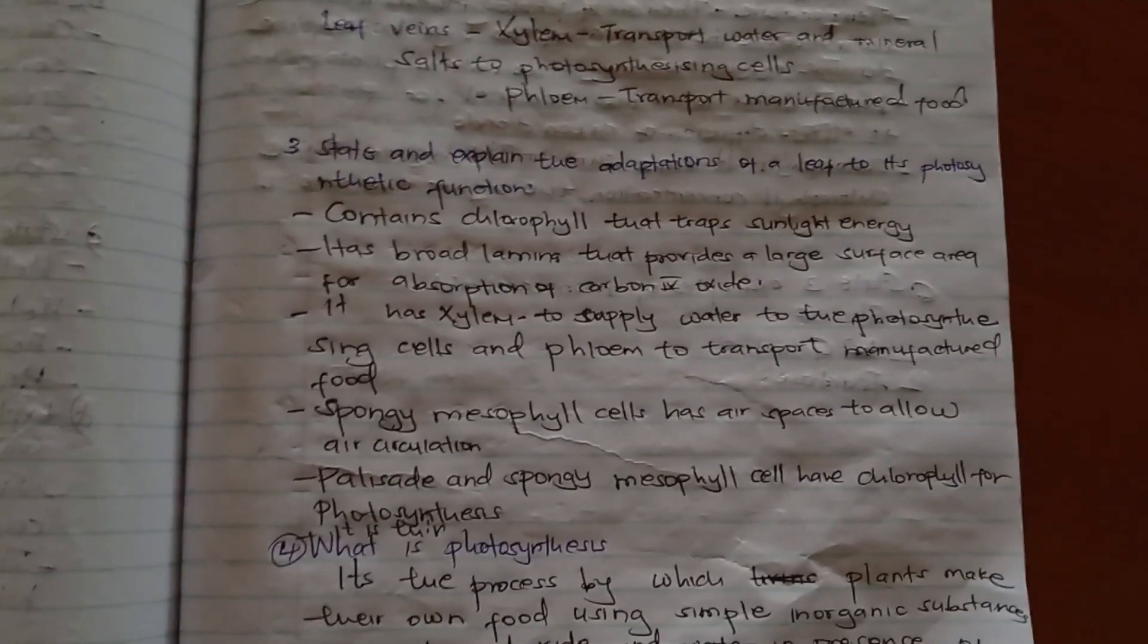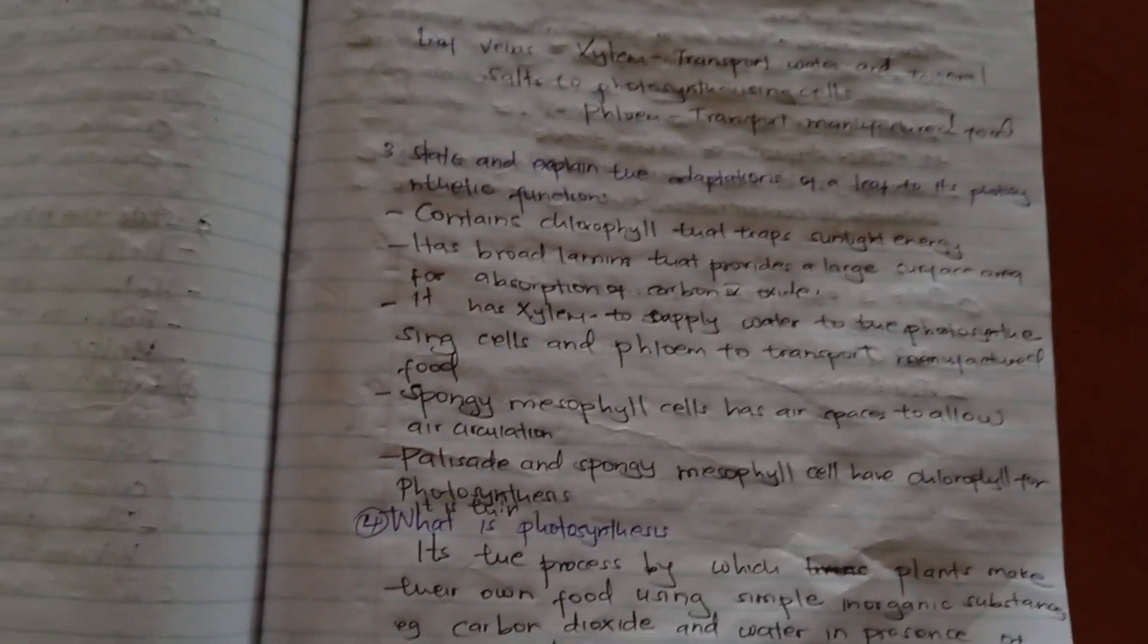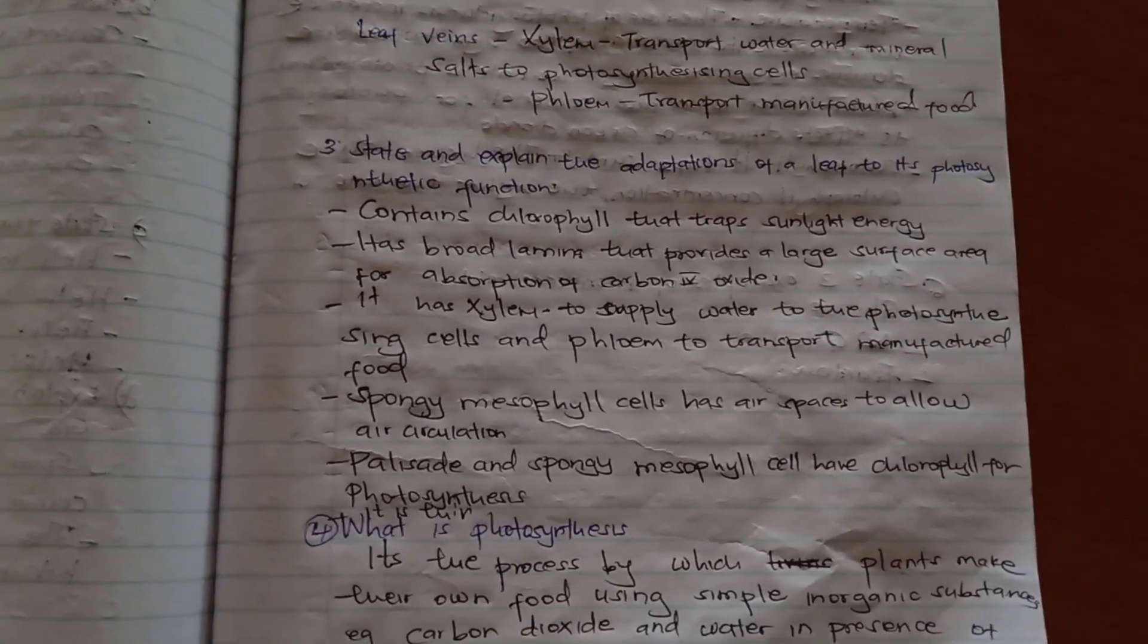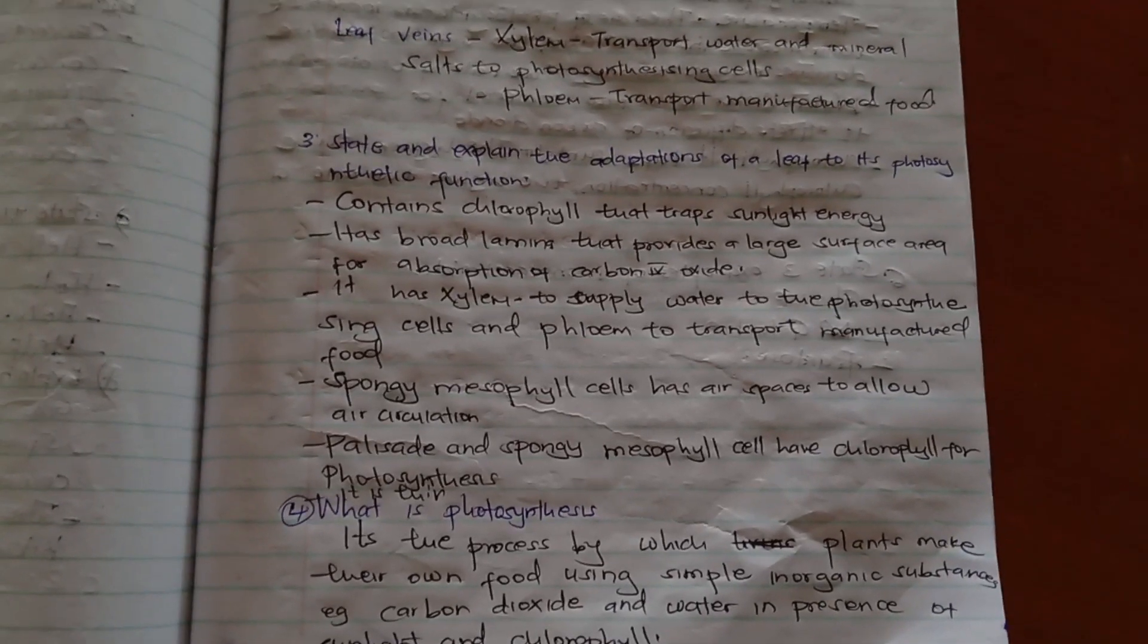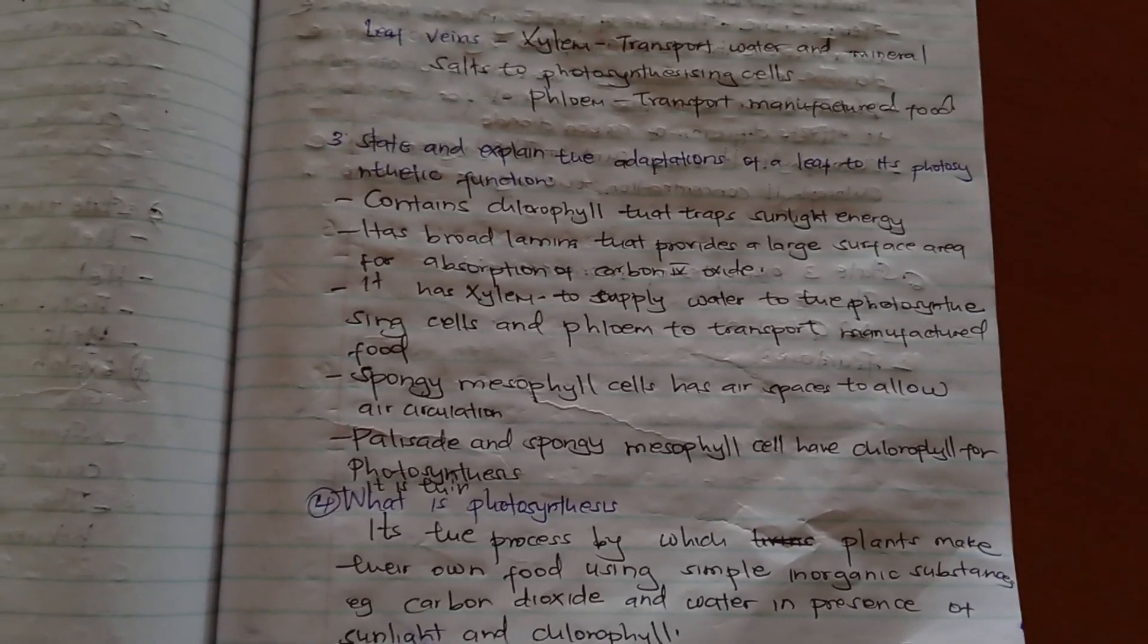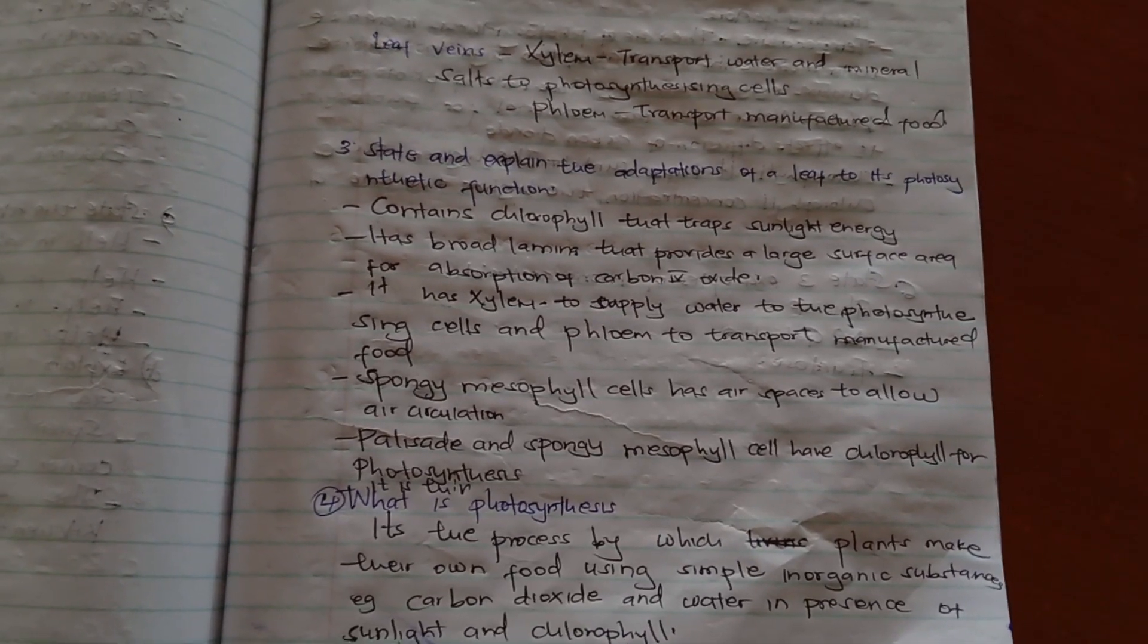State and explain the adaptations of the leaf to photosynthesis. The leaf contains chlorophyll to trap sunlight energy for photosynthesis. It also has broad lamina that provides a large surface area for absorption of carbon dioxide.